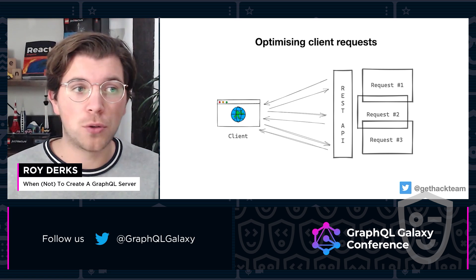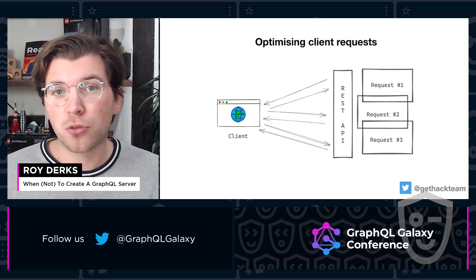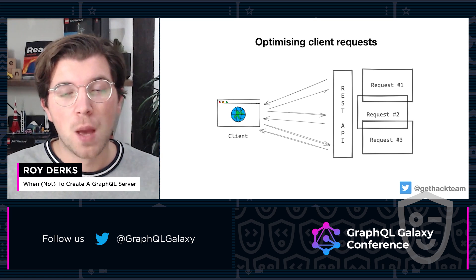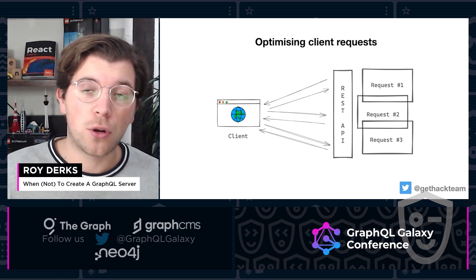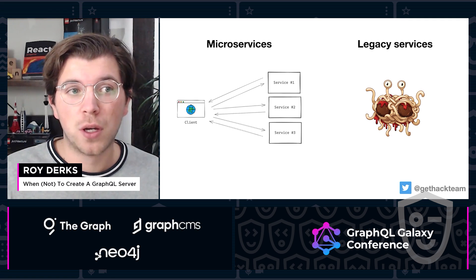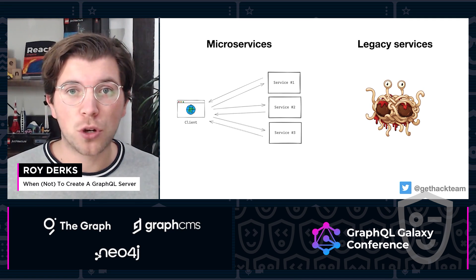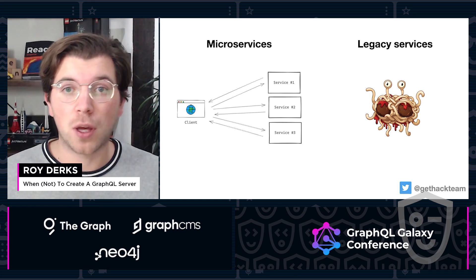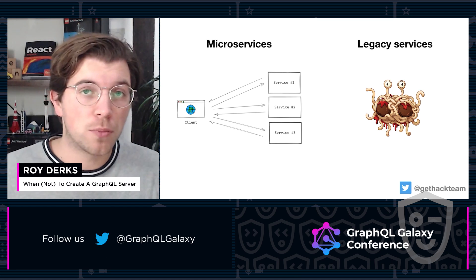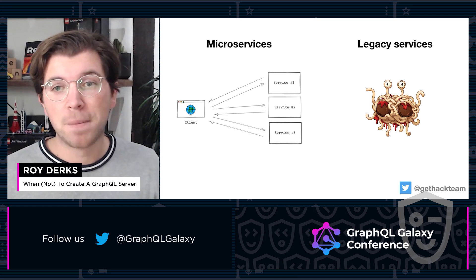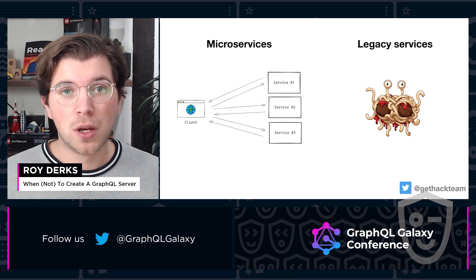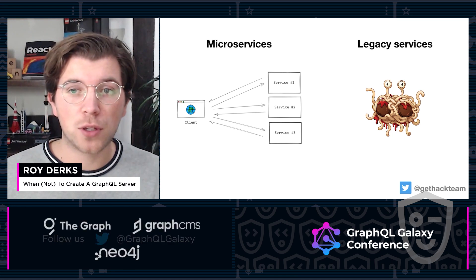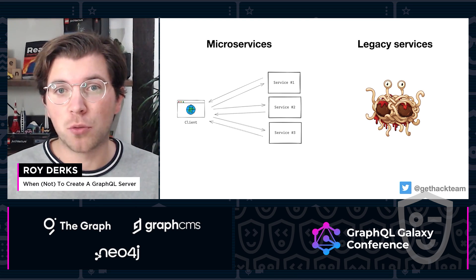GraphQL also gives autonomy to the user. As a client, you have more control about the types and the data flowing into your application. But optimizing client requests isn't the only reason to create a GraphQL server — it could also be to wrap your microservices. GraphQL is perfectly fine for bringing together multiple microservices, whether they are GraphQL microservices or built with something else. It's also very good at wrapping legacy services with a GraphQL data layer.